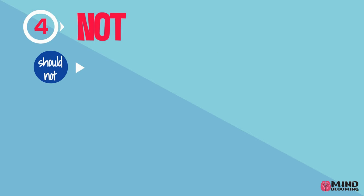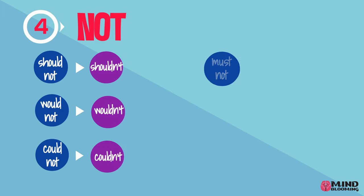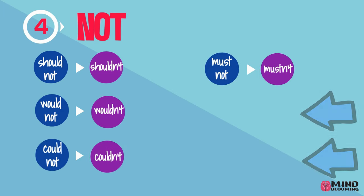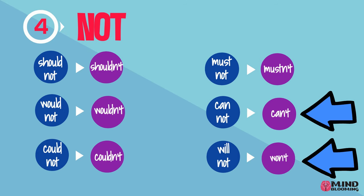Should not, shouldn't. Would not, wouldn't. Could not, couldn't. Must not, mustn't. The last two do not follow the same rule. So cannot will be can't, and will not will be won't.